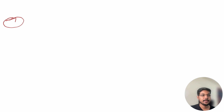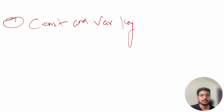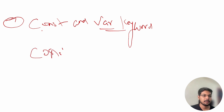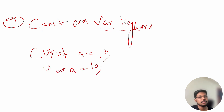Question number seven is about the const and var keywords. Make sure you prepare the difference between a constant variable and a variable declared with the var keyword — for example, `const a = 10` versus `var a = 10`. What is the difference between these two variables?